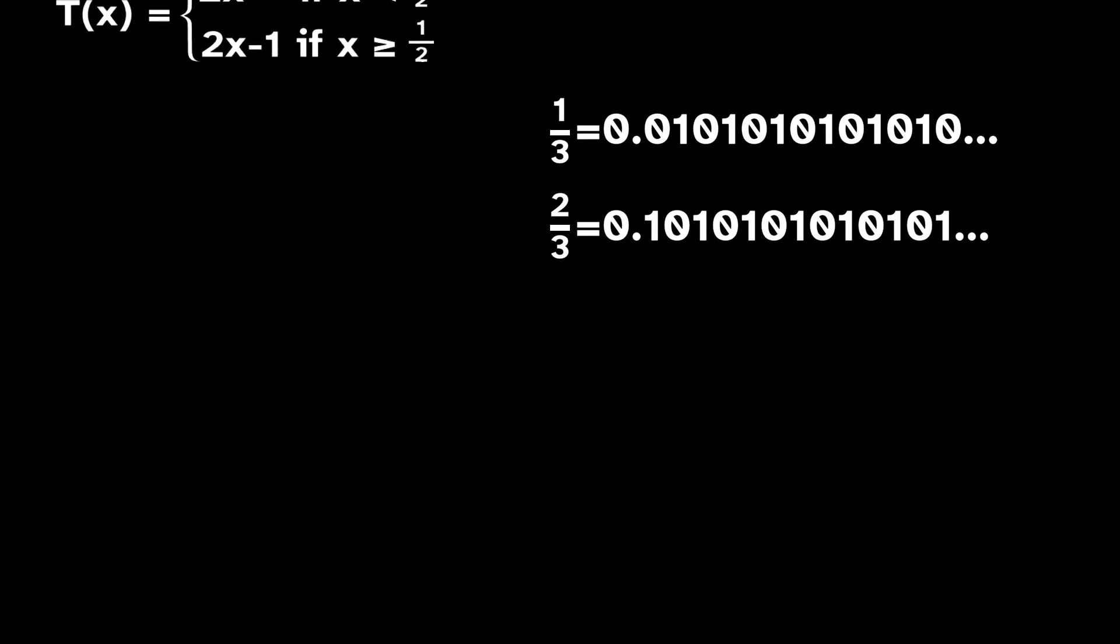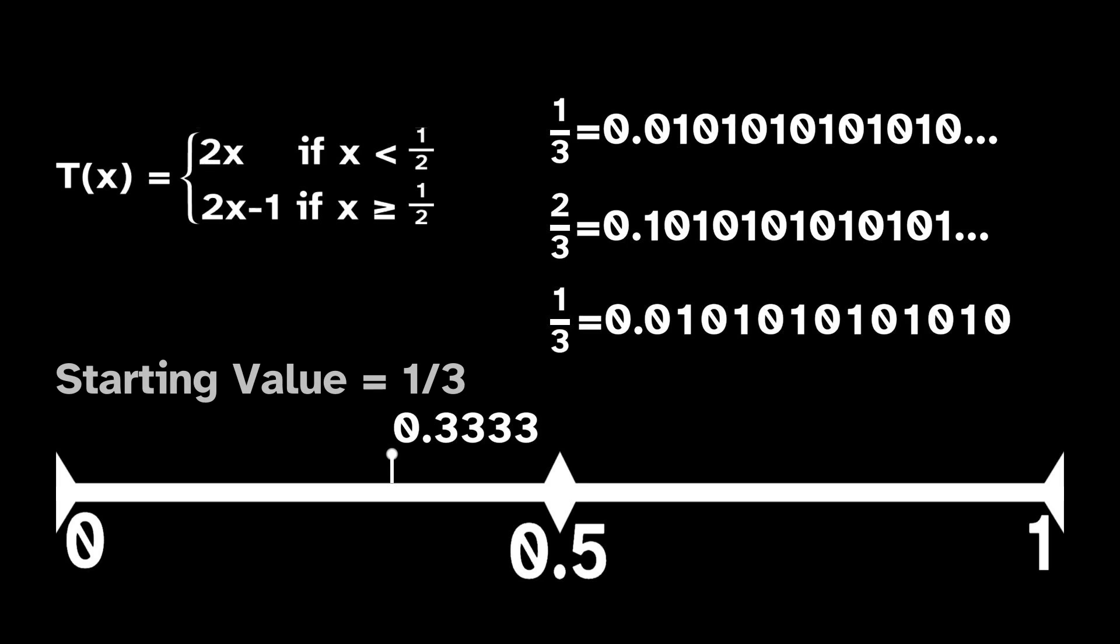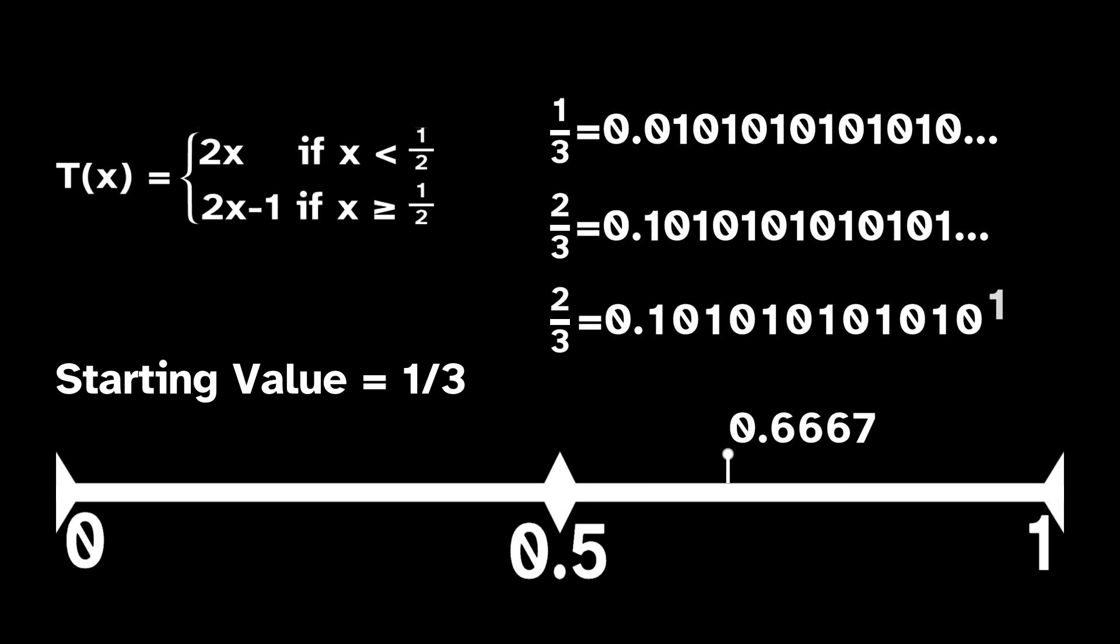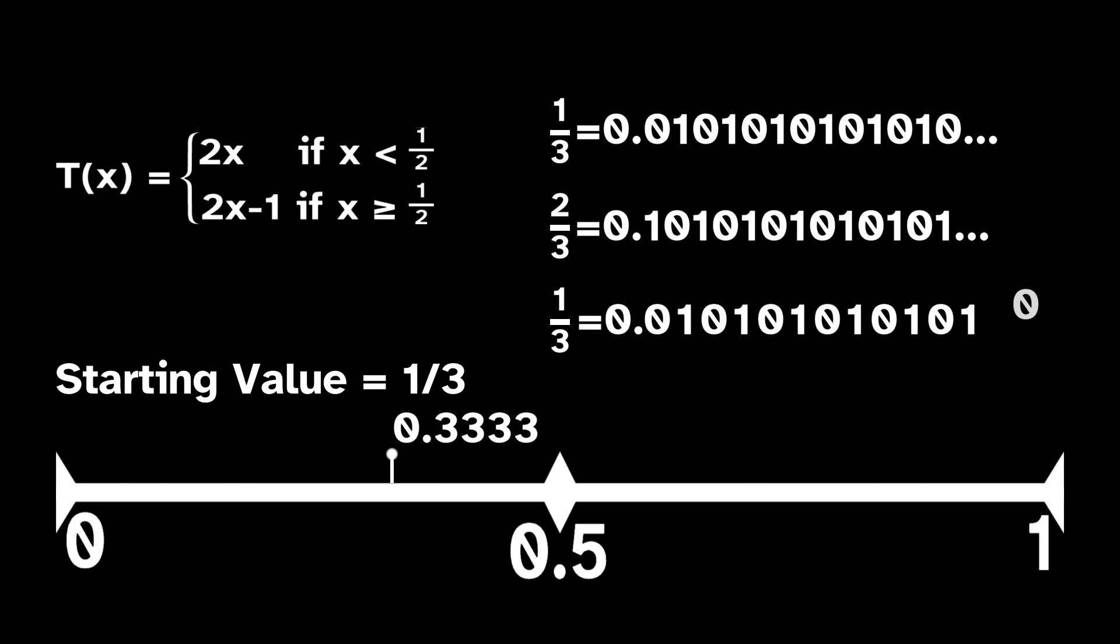Multiply it by 2 and you get 2 thirds, which in base 2 is this. Multiplying by 2 just shifts the decimal point to the right one place, just like multiplying by 10 does in base 10. If we multiply by 2 again, we get 4 thirds, or 1.01, and subtracting 1 just deletes the 1 in the ones place, leaving 1 third again.